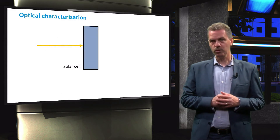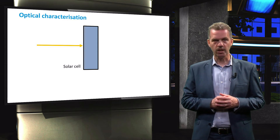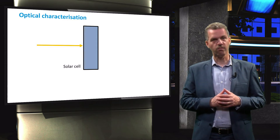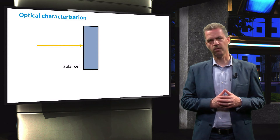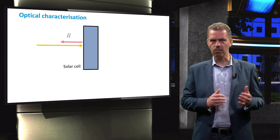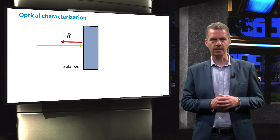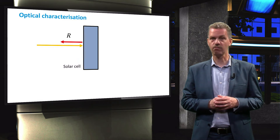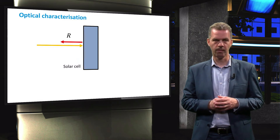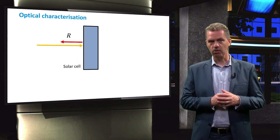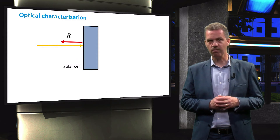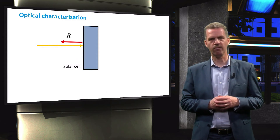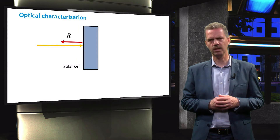We will represent the solar cell as a block of light-absorbing material. When the light falls onto the frontal surface of the solar cell, it will be partly reflected since the refractive index of the solar cell material is different from that of air. For a solar cell with a smooth surface, the reflection is specular and can be calculated by Fresnel equations.